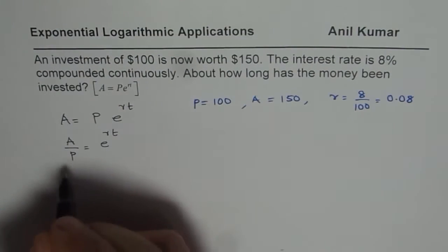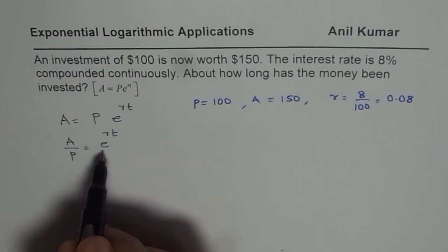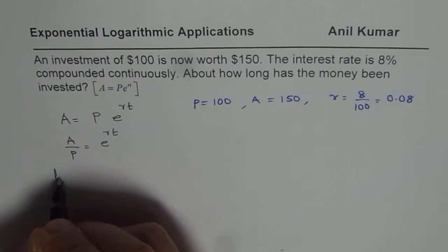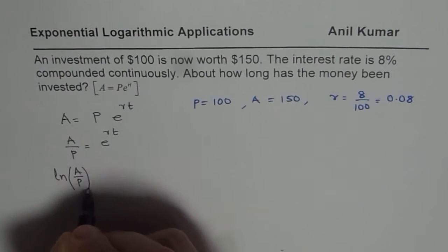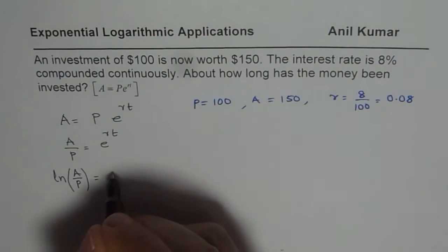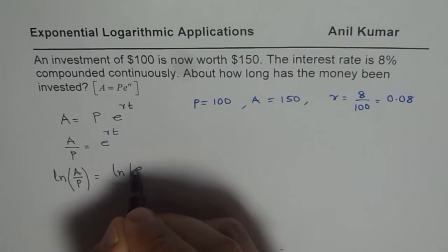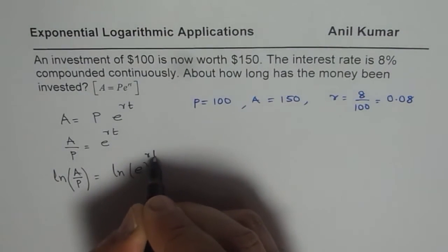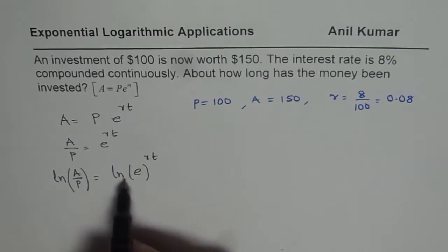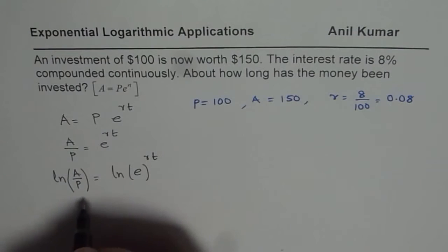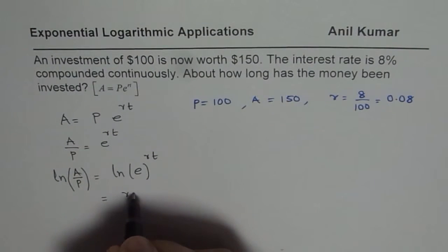Now we can take log on both sides. Since base is e, we will take ln, log to the base e of A over P. So that is what we get here. And when you do log, we will say ln of e to the power of Rt. Now ln of e is always 1.